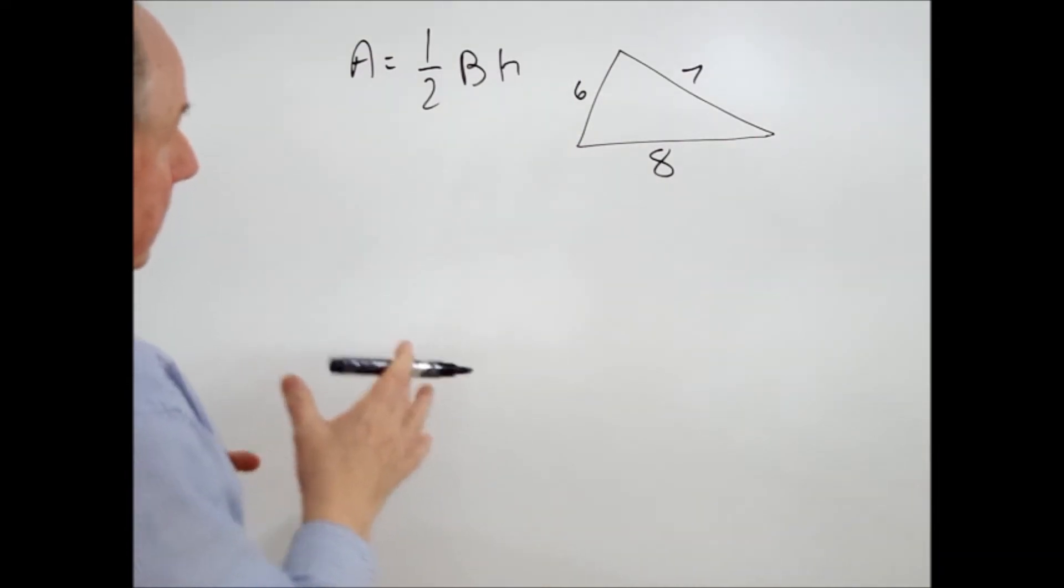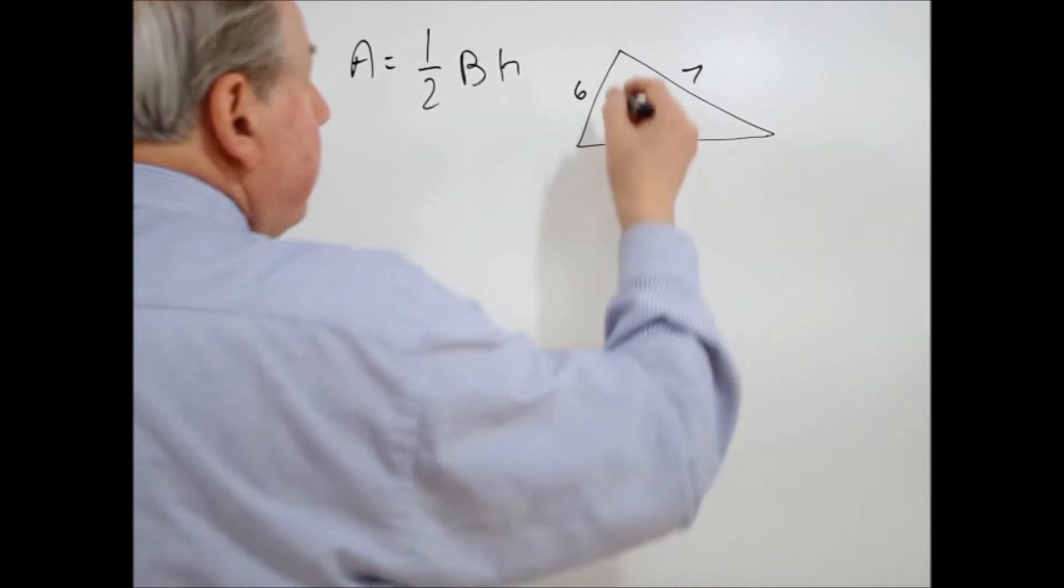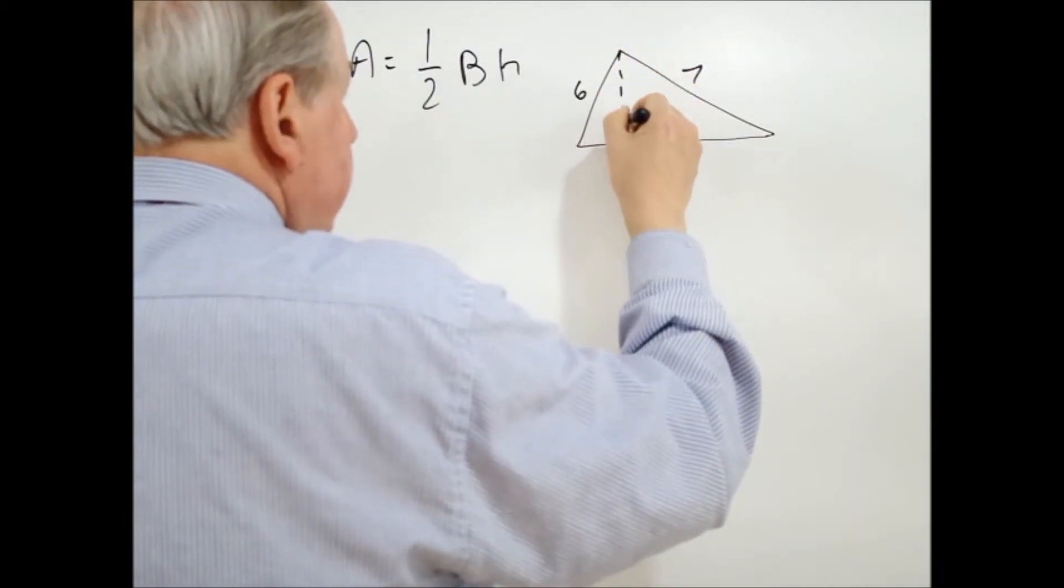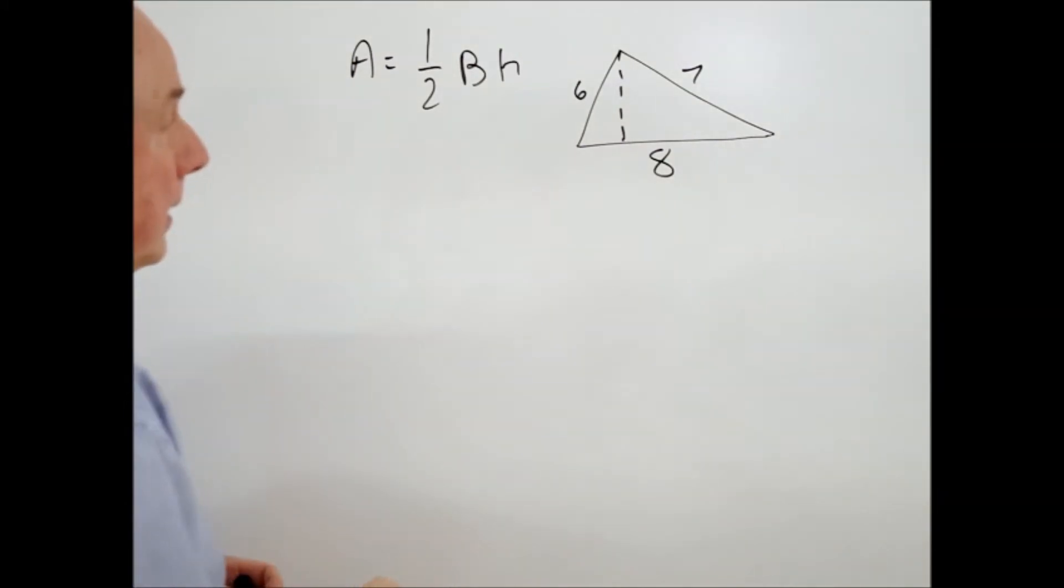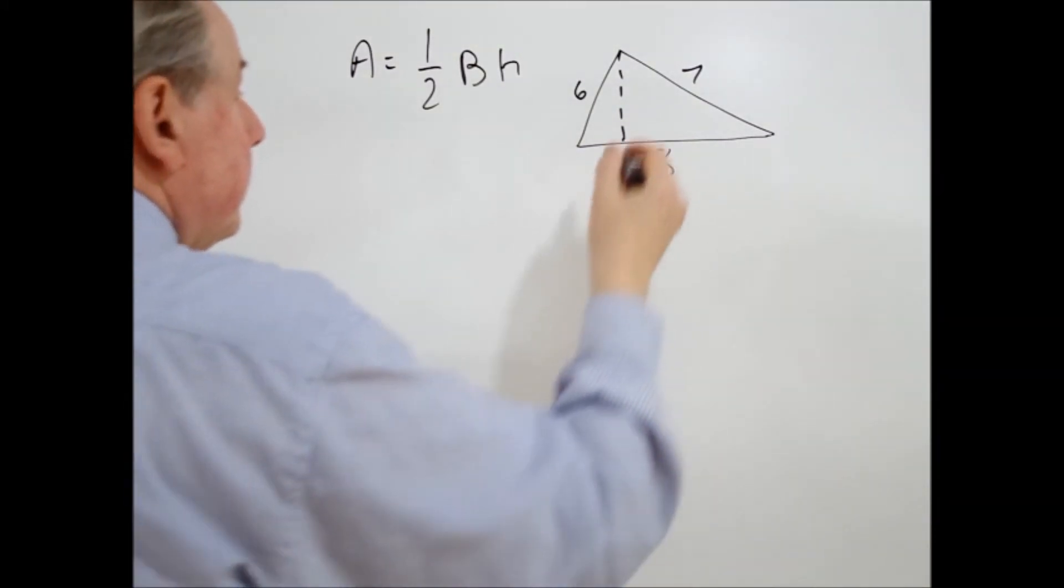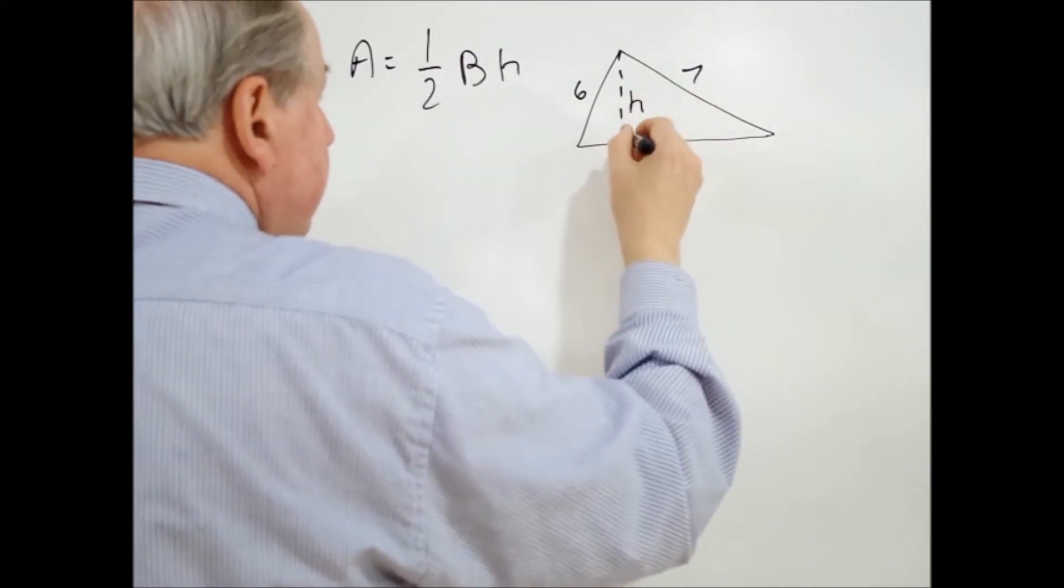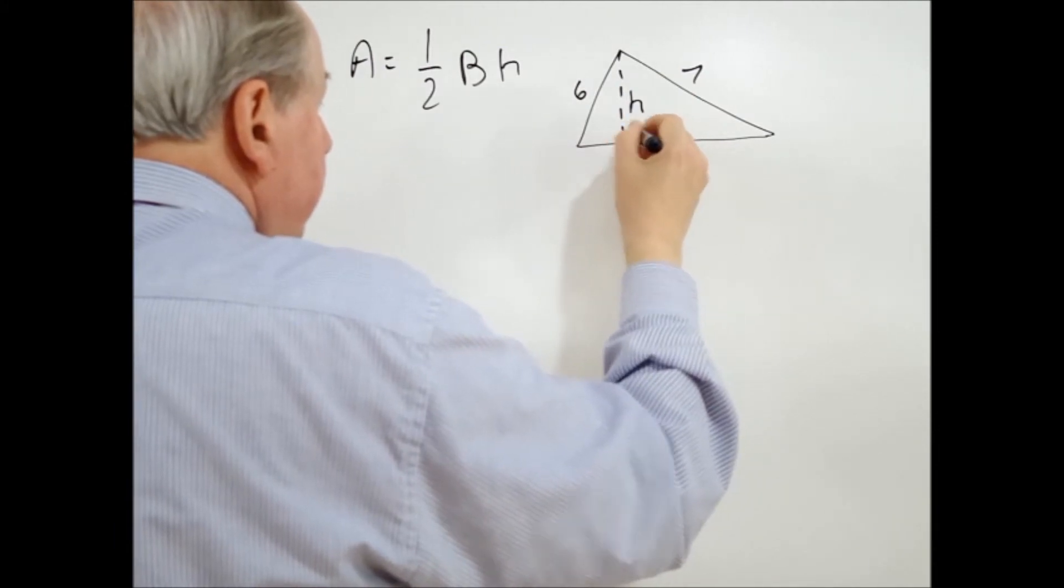So this formula cannot be applied immediately. We're going to have to work out what the height is in order to be able to come up with the answer. So in this kind of a question, it's good to start by perhaps drawing in roughly what that height is going to be. And also give it a label, H. So that being height, this will be right angles.